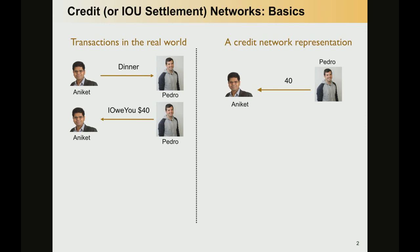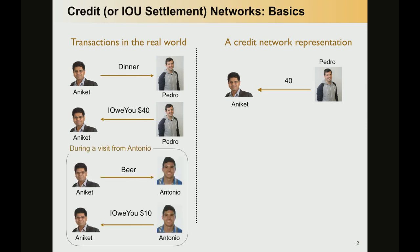We can use credit networks to represent more elaborated scenarios. Imagine that my brother Antonio comes for a visit and he comes for a drink. It's his first time in the U.S., he doesn't really have dollars, so Alicad is again a nice person and he pays for the beer for my brother. At that moment, my brother actually owes $10 to Alicad. Antonio can settle the debt in the same manner — he can directly owe credit to Alicad.